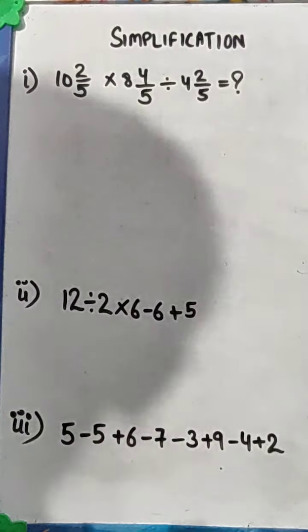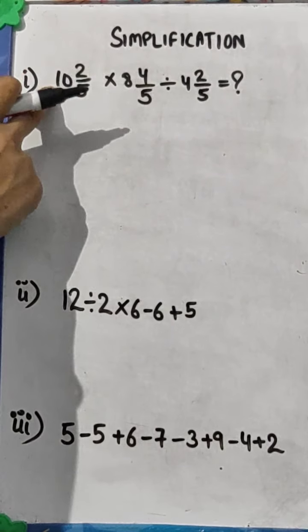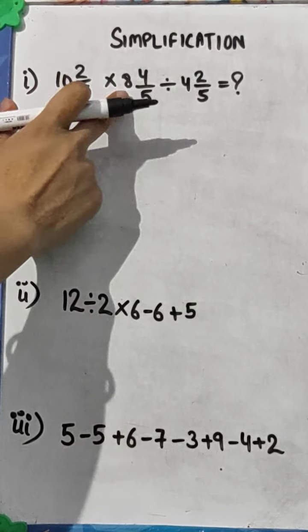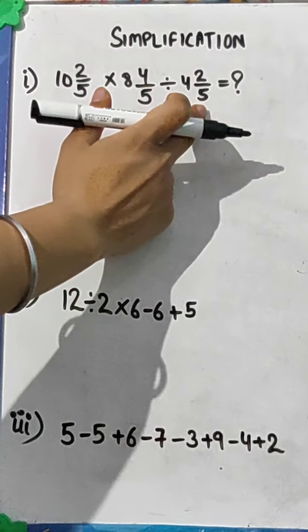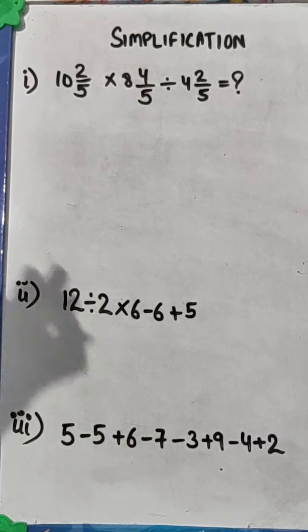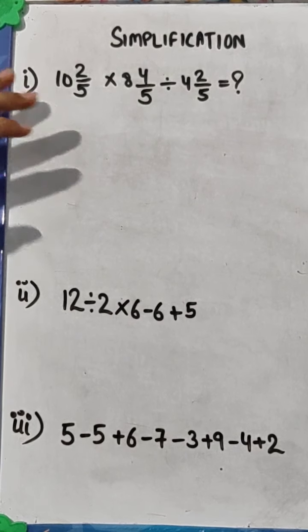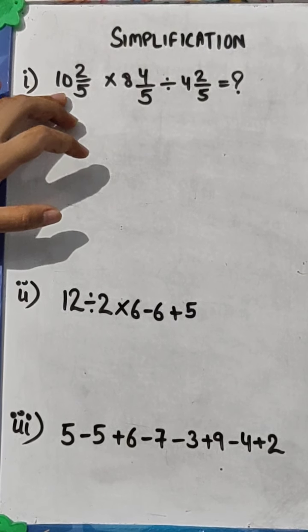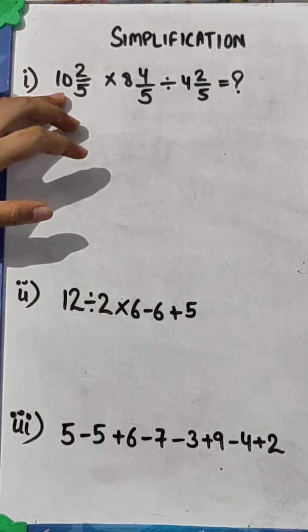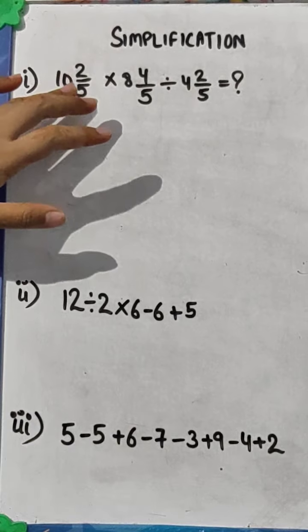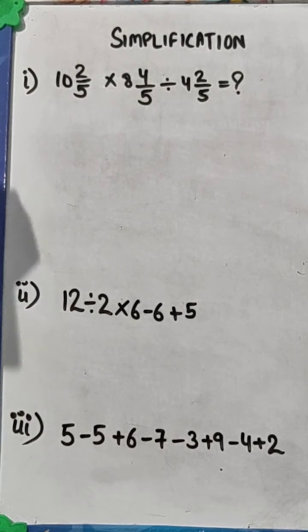Now come to the first one. First question is, 10 whole 2 by 5 multiplied by 8 whole 4 by 5 divided by 4 whole 2 by 5 is equal to question mark. We have to solve this and find the value of question mark. Now as you all know, this is mixed fraction. And as I told you in my previous video, how to convert a mixed fraction into improper fraction.